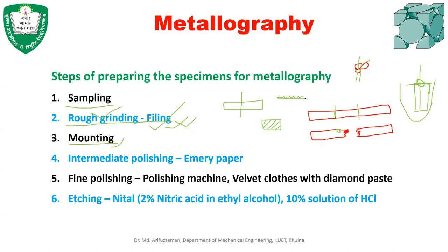The microstructure is viewed through reflected light. Light is incident on the surface and reflects back to your eyes. If the surface is rough, the light rays will deflect in various directions and you won't see the proper microstructure. However, if you want to analyze the surface roughness due to cutting, you can examine it under the microscope. But to investigate the actual microstructure — the volume fraction of phases — you need a plain, flat surface.